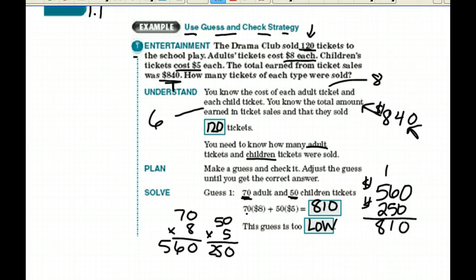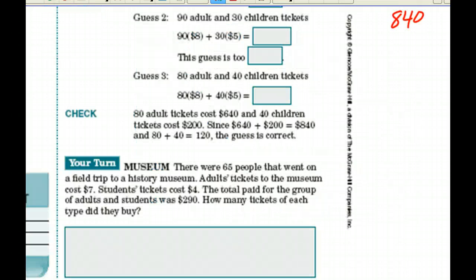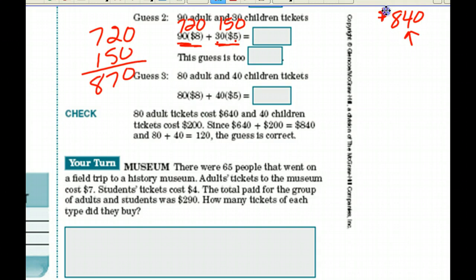Now we're going to adjust our guess and try again. We move on to guess number two. We need $840 worth of tickets. Our next guess is 90 adult and 30 children. 90 times 8, that's going to give us $720 in adults' tickets. 30 times 5, that would give us $150 in children's tickets. Let's add that together. We get $870. We know we're looking for that $840, so this guess is too high.